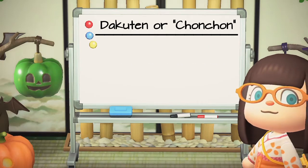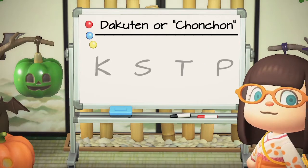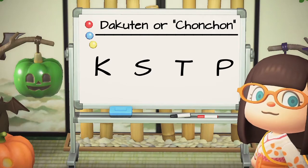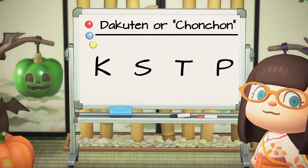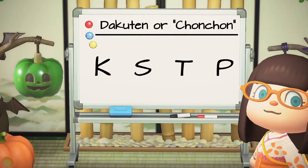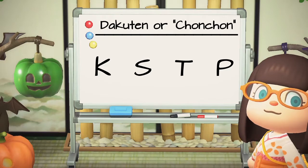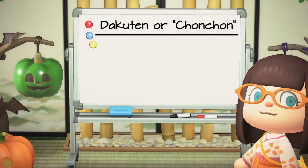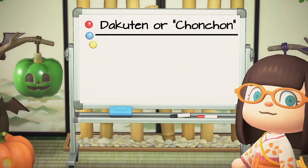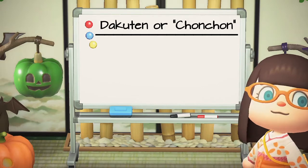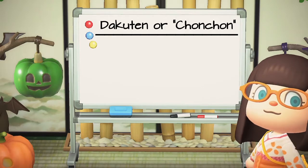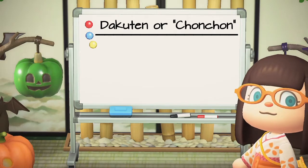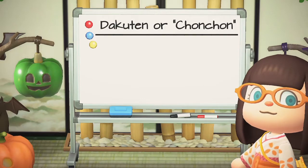For example, the letters k, s, t, and p are all consonants because they are not vowels. So again, it is generally applied to hiragana that start with consonants, but not every hiragana group or column uses the chonchon.